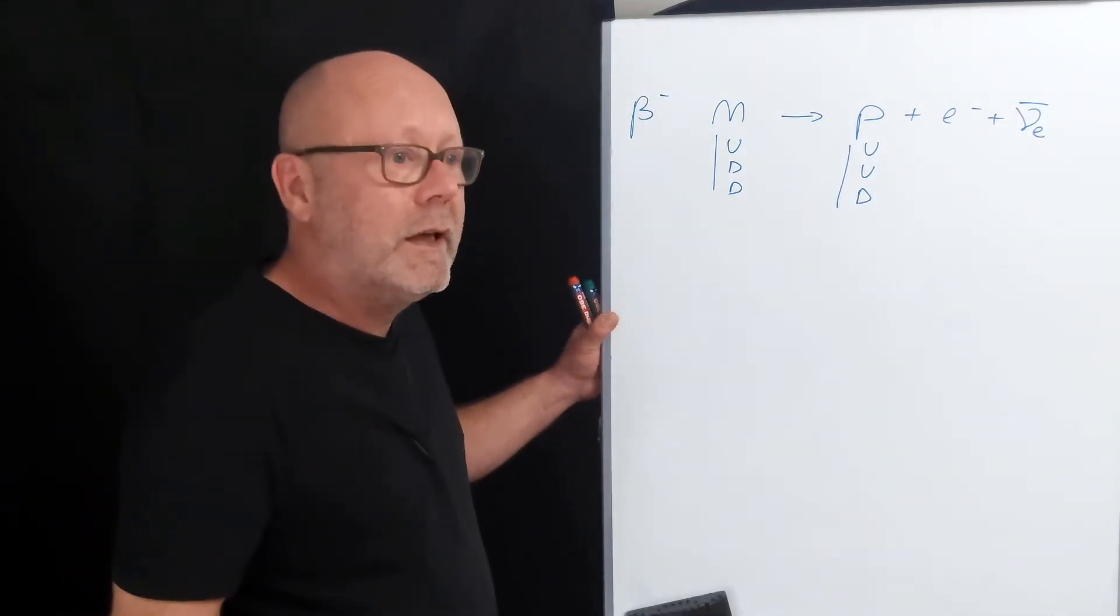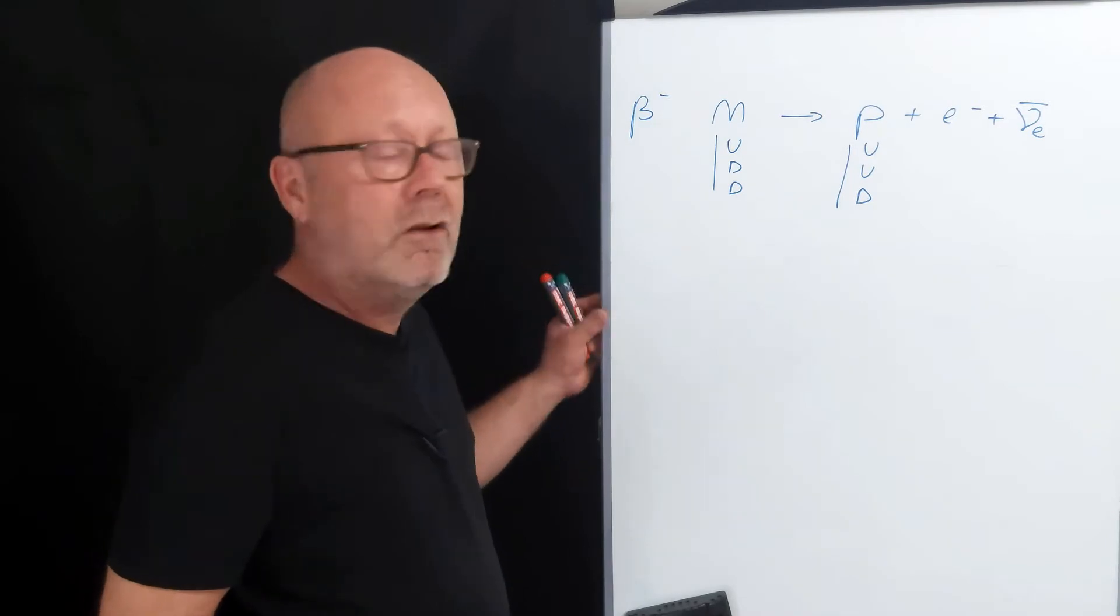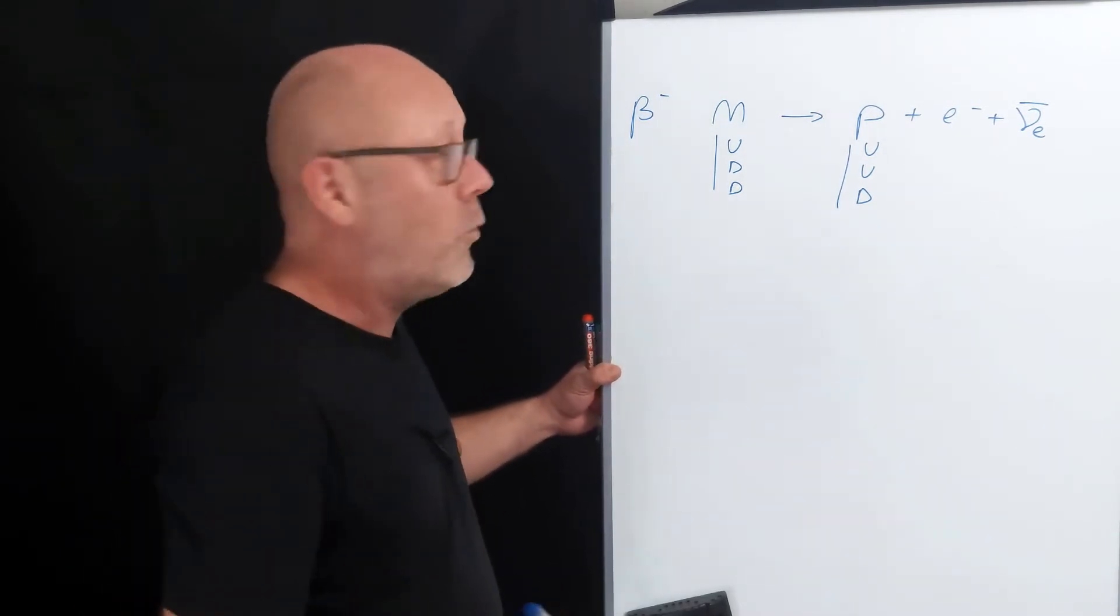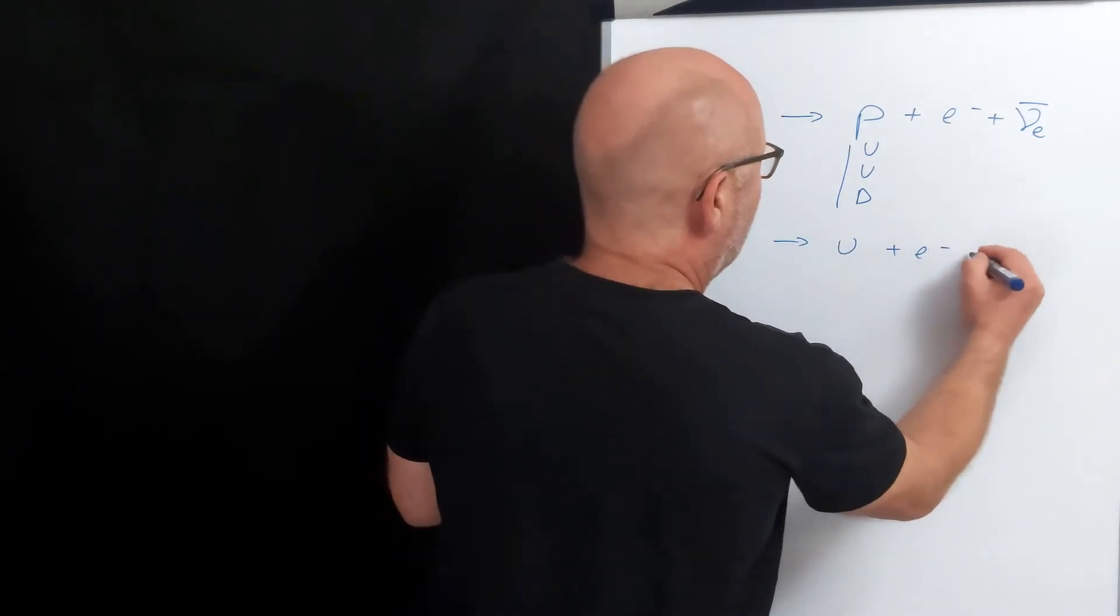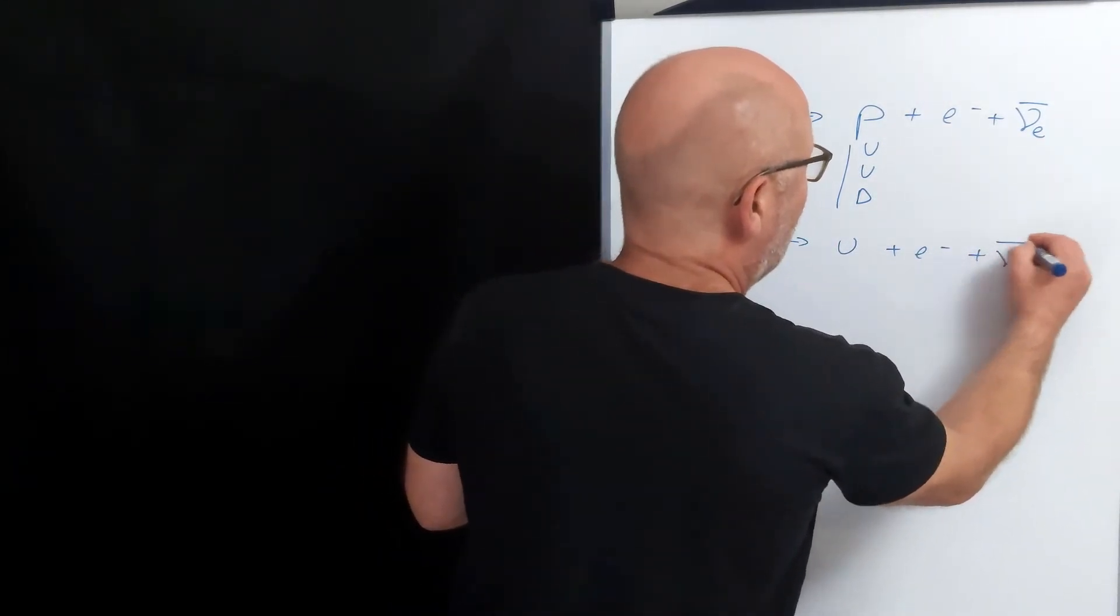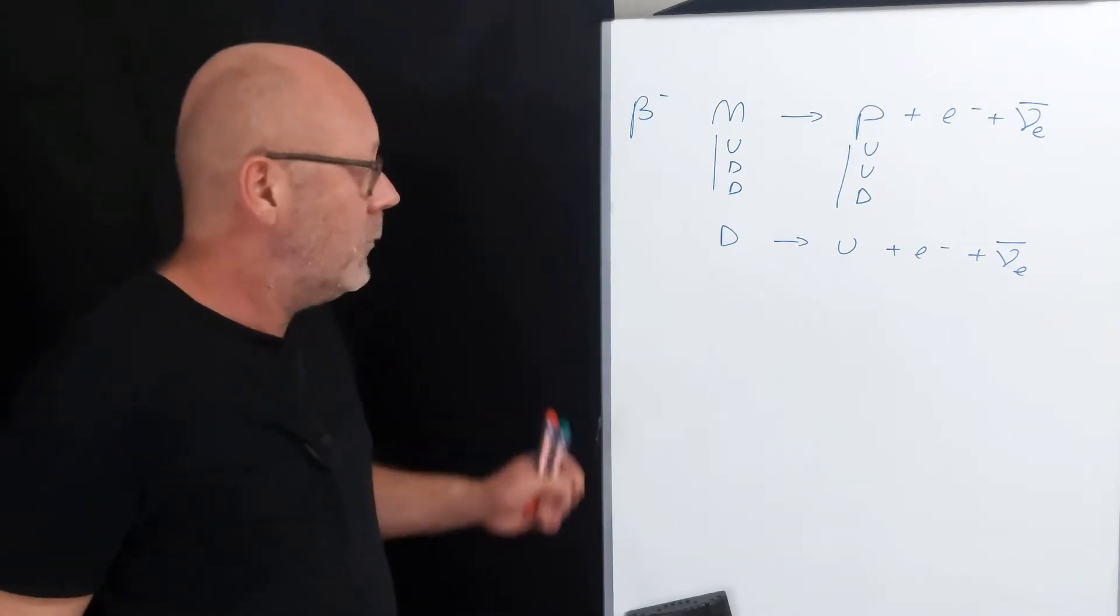So if we want, we can rewrite this reaction using the elementary particles. So we've got a down quark becoming an up quark, plus an electron, and an anti-neutrino of the electron.